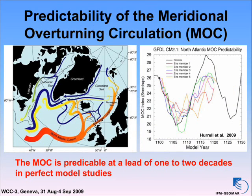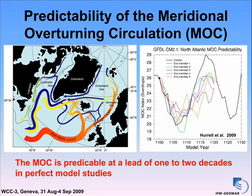The North Atlantic is the home of the thermohaline circulation or the meridional overturning circulation. We have conducted classical predictability studies — perfect model experiments — and the strength of the meridional overturning circulation may be predictable, provided you have suitable initial conditions. There is significant skill out to 10, maybe even 20 years. Since these variations are connected to the North Atlantic sea surface temperature, there may be hope that we can really predict decadal changes in highly societally relevant quantities.